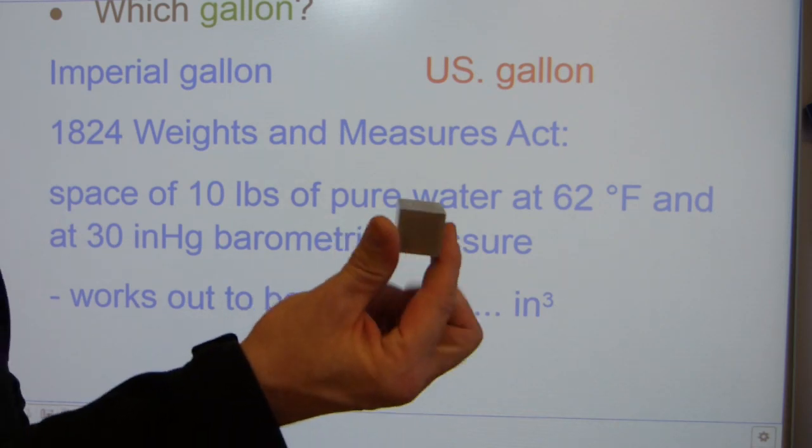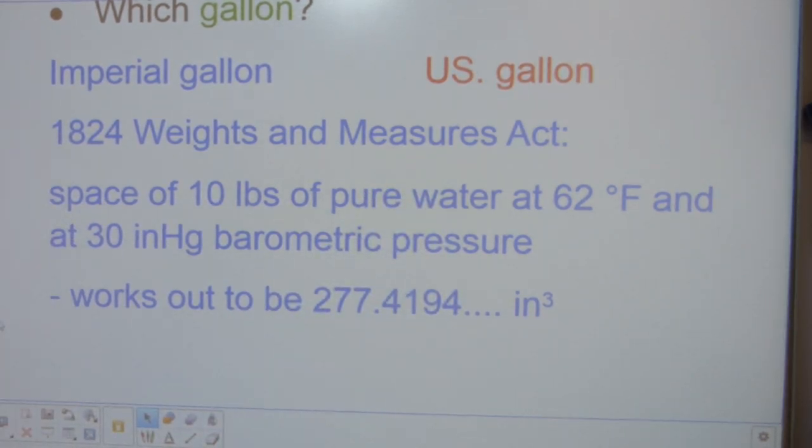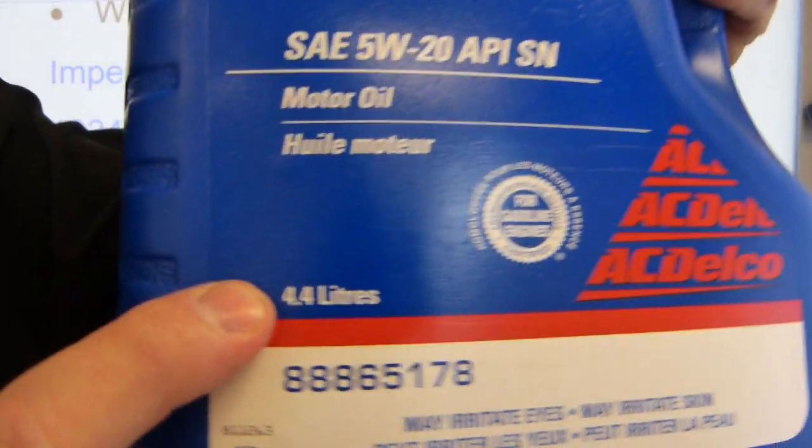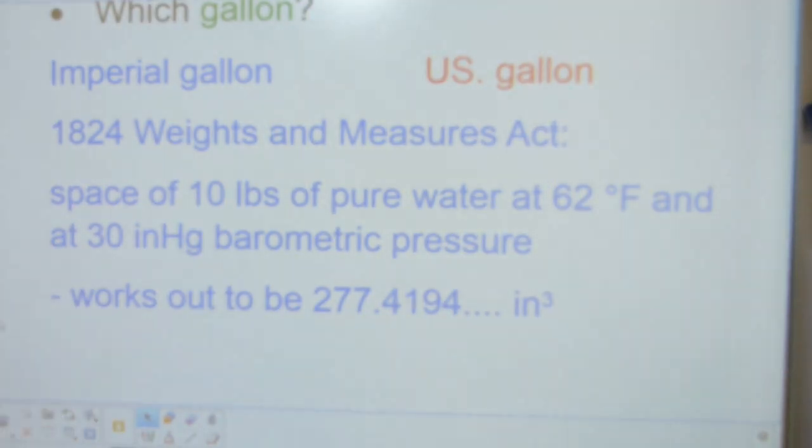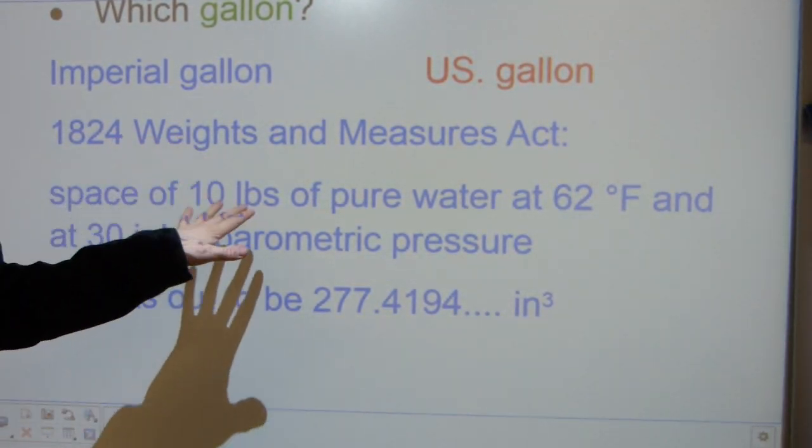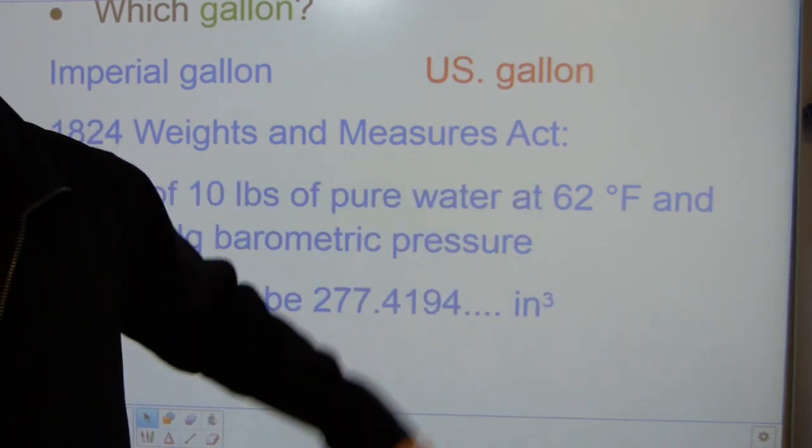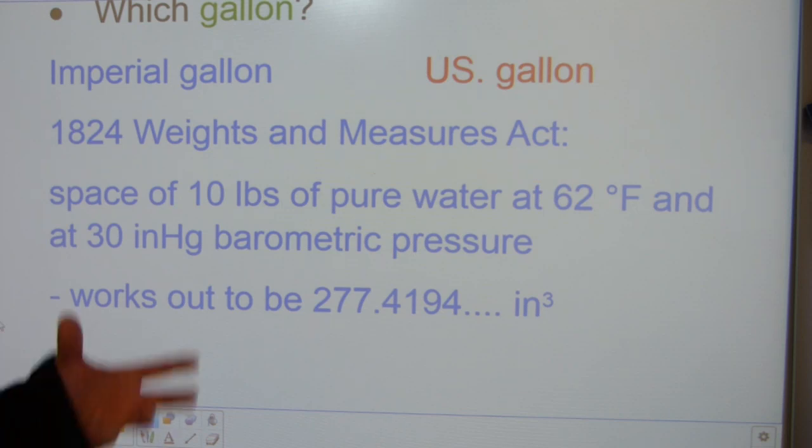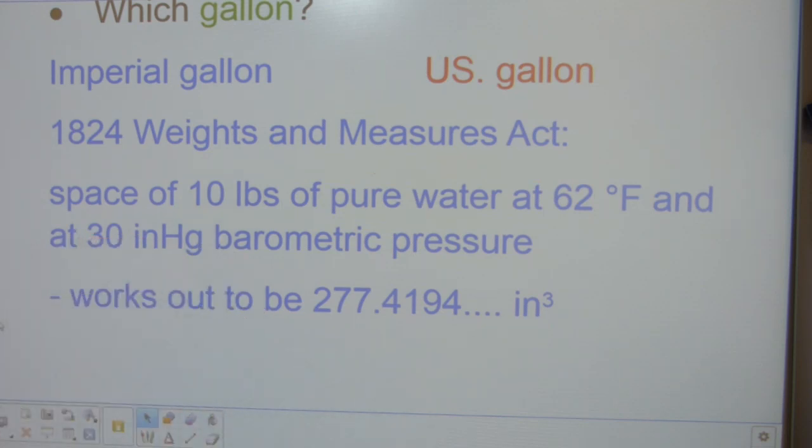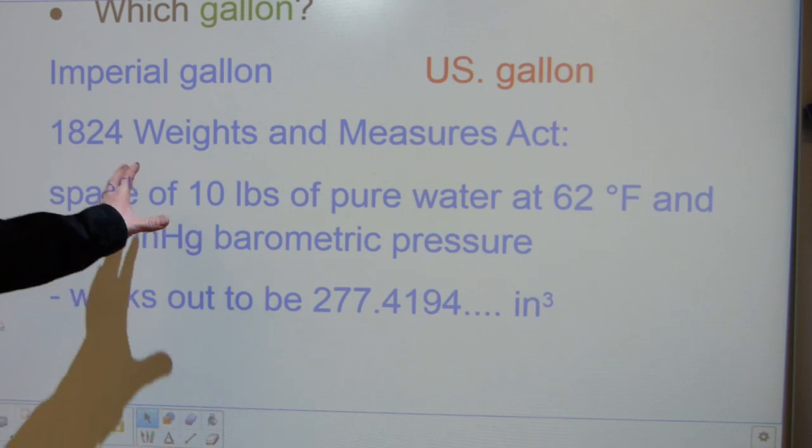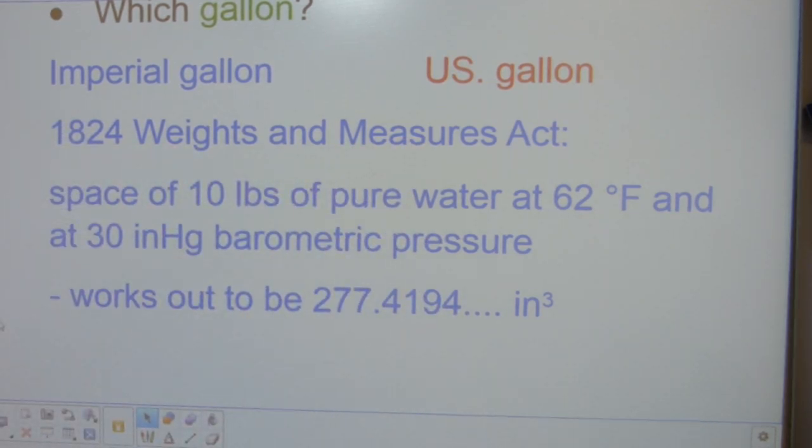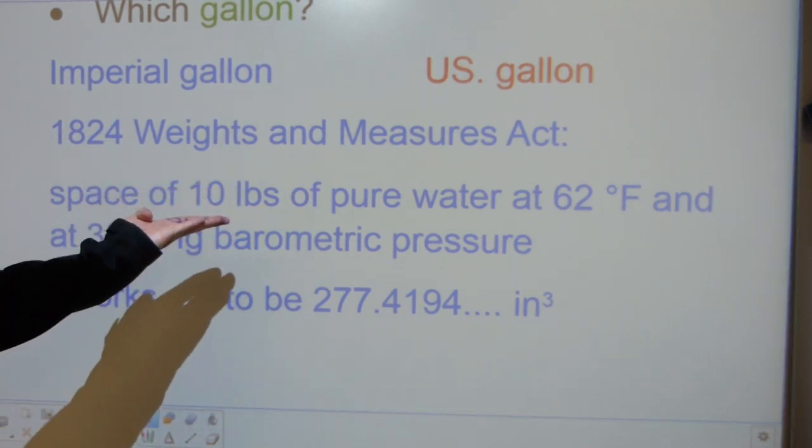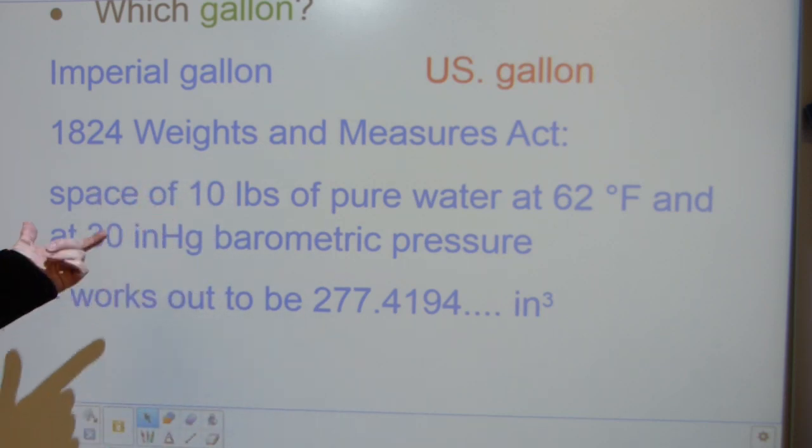In this system, the gallon was not defined based on number of cubic inches but was defined completely differently. It was defined as the space that holds 10 pounds of pure or distilled water at 62 degrees Fahrenheit, at 30 inches of mercury of barometric air pressure at sea level, measured in normal gravitational pull at around 45th latitude. Because this is how they defined the gallon, it's based on weight. It has a fixed weight.